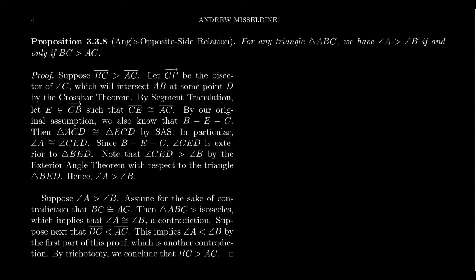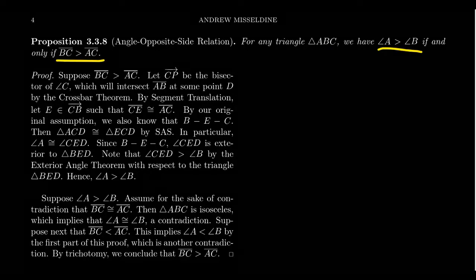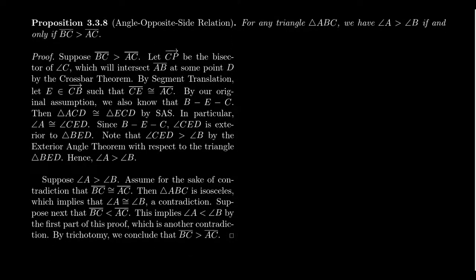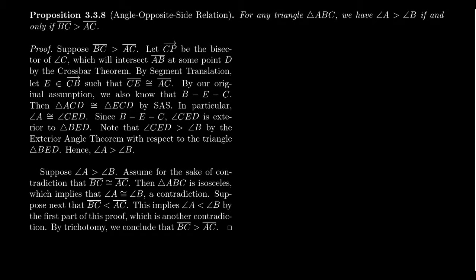AOS tells us the following: for any triangle ABC, angle A is greater than angle B if and only if side length BC is greater than side length AC. So this tells us that bigger angles coincide with bigger sides, and bigger sides coincide with bigger angles. That's what we mean by the angle-opposite-side relationship — the big side goes with the big angle. This observation is extremely useful and critical when we analyze triangles in a congruence geometry.